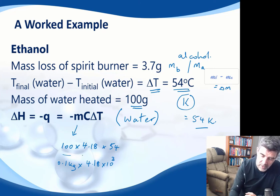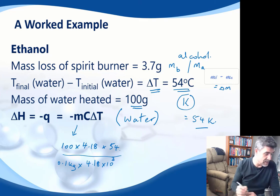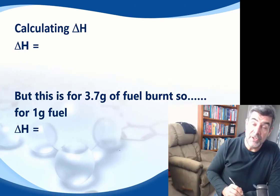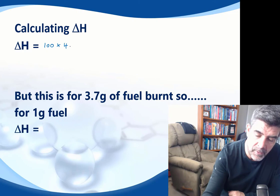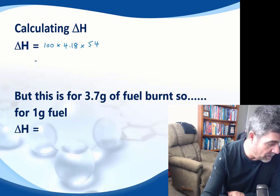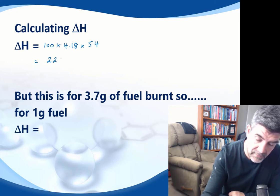So once we have the change in temperature in degree C, we can easily just convert that into Kelvin. And so that will go into our equation. And when we put those values into our equation, we'll get a certain number. Just to recap on that, the calculation, we had our mass which was 100, we multiplied that by 4.18 which was our specific heat, and then by 54. And when we do that, we get a number of 22,572 joules.